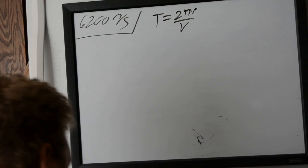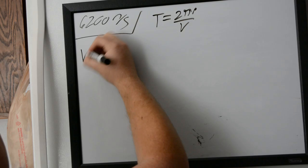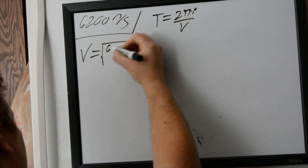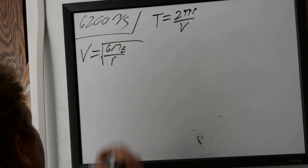So what we need to do is find some equation that relates velocity to our radius, which conveniently enough is the equation for orbital velocity. So we can just solve this equation for r, and that'll give us our radius.